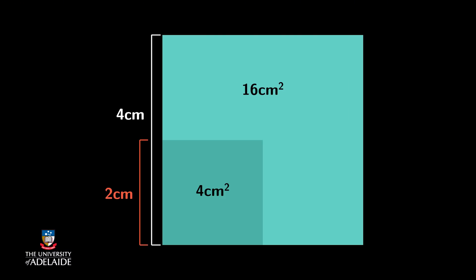A power law, also known as a scaling law, states that a relative change in one quantity results in a proportional relative change in another. A simple example of this law in action is the area of a square. If we double the length of the side from 2 cm to 4 cm, the area will quadruple from 4 to 16 cm squared.